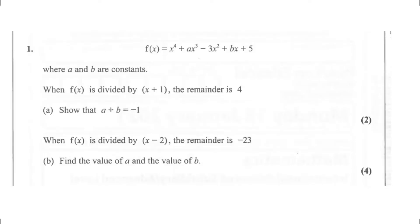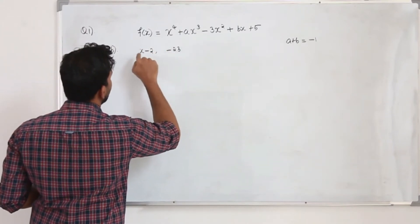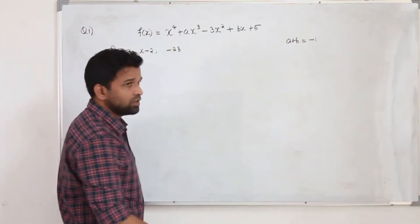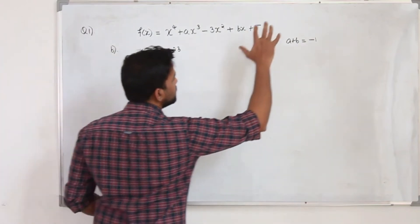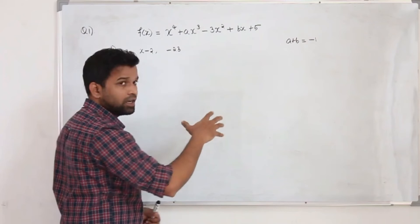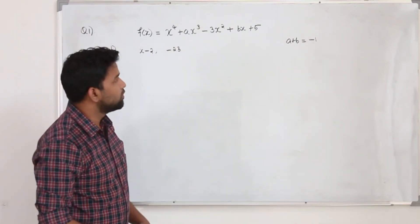Now part B, when f of x is divided by x minus 2, the remainder is minus 23. Find the value of a and b. The question carries 4 marks. Here, we are dividing this function by another linear factor, x minus 2. So when we divide, the remainder is minus 23. And they want you to find the value of a and b. So what we are going to do, this is the equation that we got in part A. We are going to form another equation in a and b using this information. Then solve the simultaneous equation, so you can get the values of a and b.